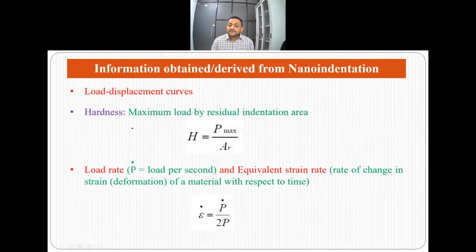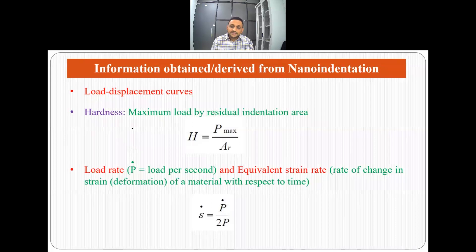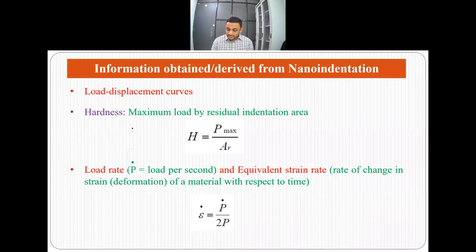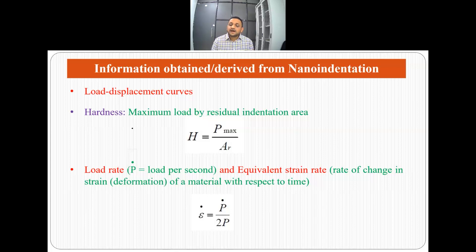What information can we derive or obtain from nano-indentation? The first information we directly obtain when performing a nano-indentation experiment is the load-displacement curve — that is, with increasing load, how far the tip penetrates into the sample. The second is hardness, which is the maximum load divided by the residual indentation area. When we divide the maximum load specified by us by the overall residual indentation area, we get the hardness of the material.